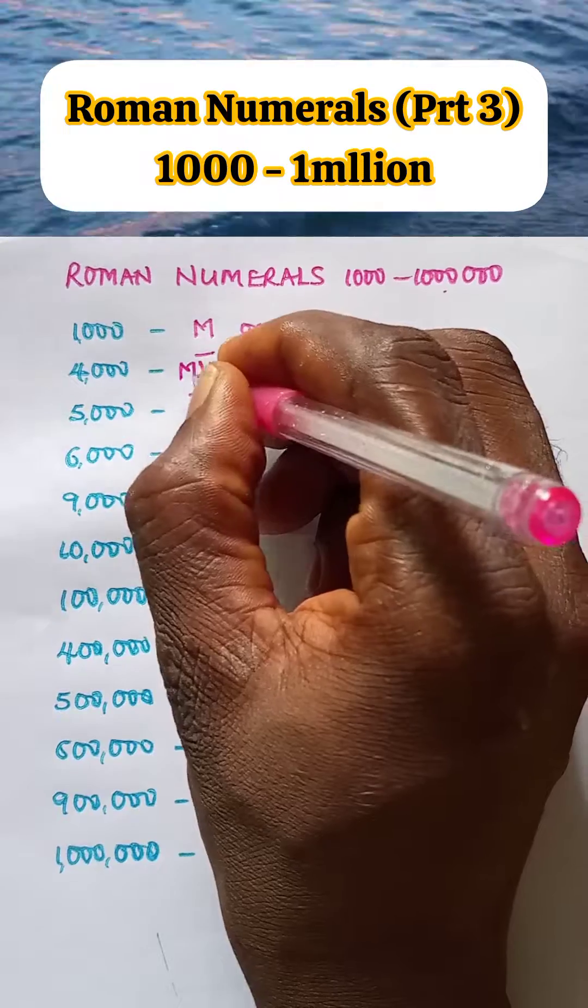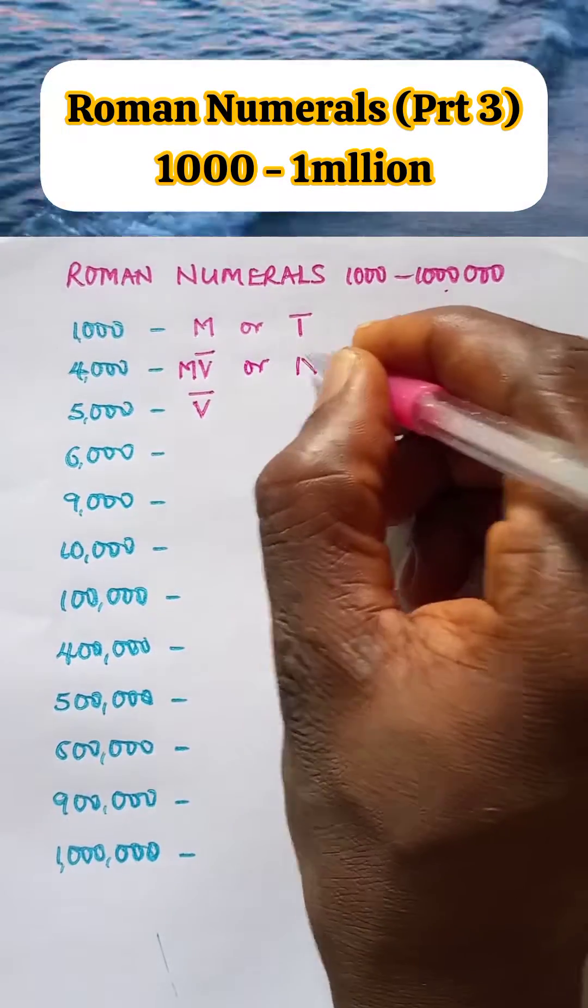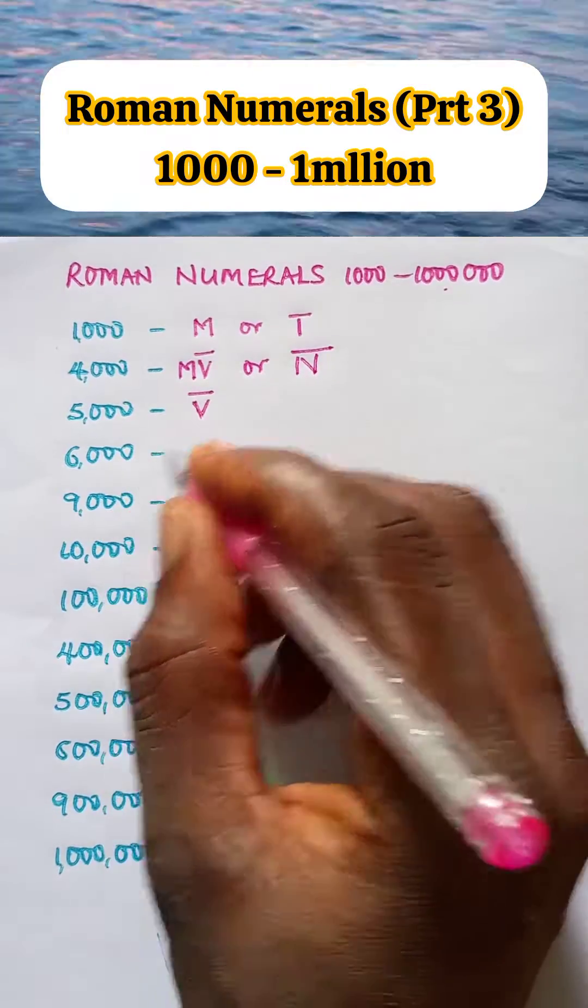Which is V bar minus one thousand, so MV bar is four thousand, or IV bar, which is four bar. Six thousand...